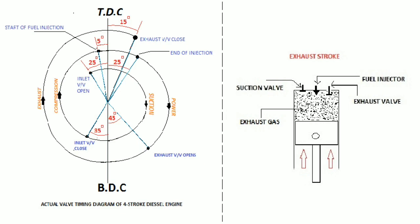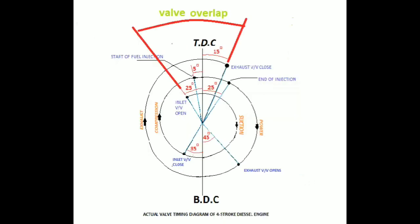This angle depends on the manufacturer. There is a phenomenon called overlap. In the timing diagram, we can see that inlet and exhaust valves are opened up to a certain period of angle simultaneously. This period of angle is called valve overlap.